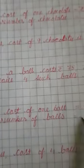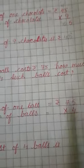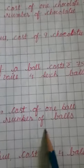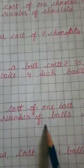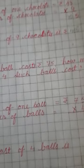Cost of one ball equals rupees 75. Number of balls: 4. Then multiply.